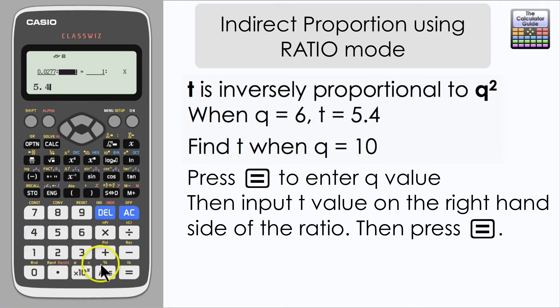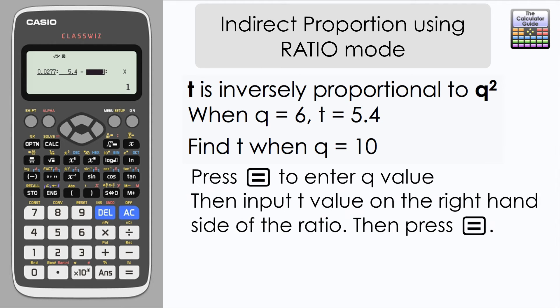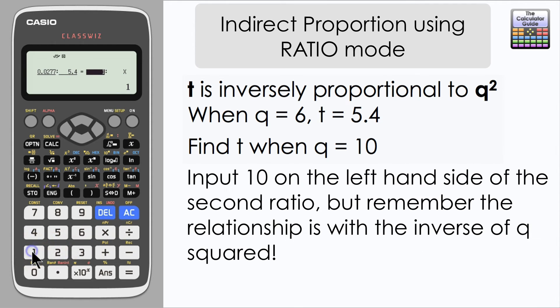On the right hand side I'm going to input my relevant T value which is 5.4. On the left hand side, well we know some information about Q and we need to discover the information about T. So on this left hand side I'm going to input a Q value of 10. But remember I still want that same inverse proportional relationship. So I need to square it and then I need to find the inverse. Easiest way is to use the reciprocal button.